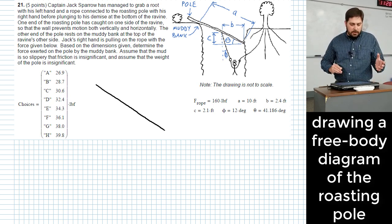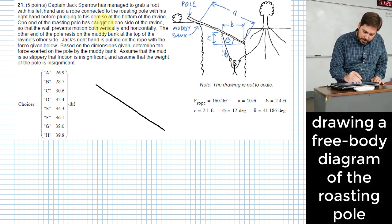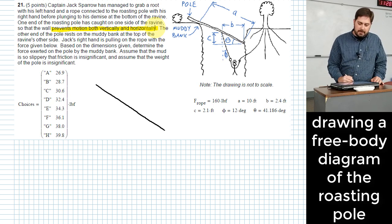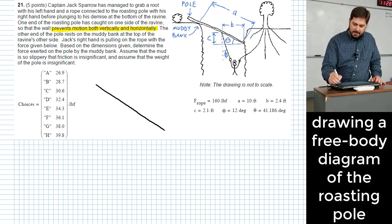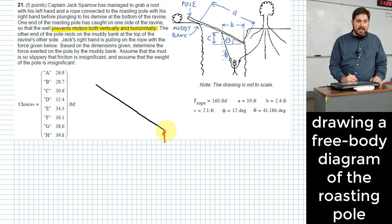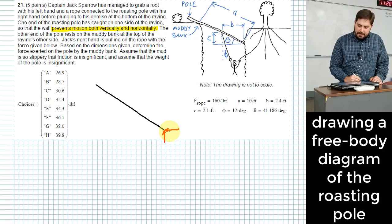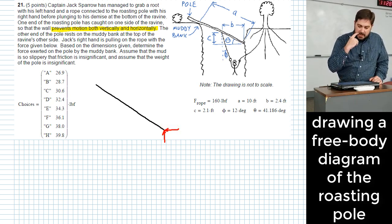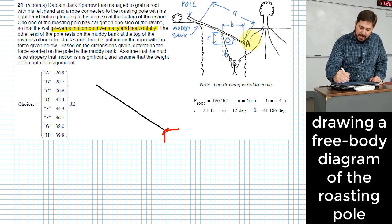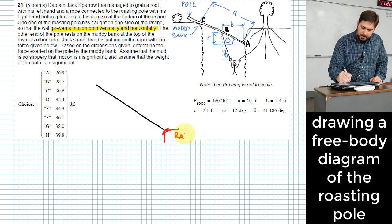Might want to start thinking about forces acting on it. So the first place I'll say to look in the problem statement, it says one end of the roasting pole has caught on one side of the ravine so that the wall prevents motion both vertically and horizontally. What do you think it's talking about right there? Right over here, this end of the pole probably acts like a pin, right? So we show two reactions right here. Sometimes it makes things easier if you actually assign some letters. Let me call that point A. I'll call this point B and this point C over here. So let's call this RAX and this RAY.